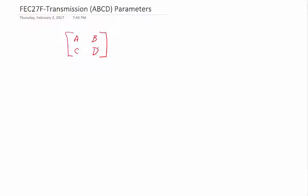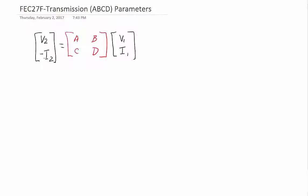This parameter kind of breaks away from all the other ones. All the other ones just use the designation for the location in the matrix to say where they are. In this case they simply used A, B, C, and D. So how does this fit into the calculation? If you give me the voltage and current for port 1, we can use this parameter to easily find what V2 and minus I2 are, which are the values of port 2.